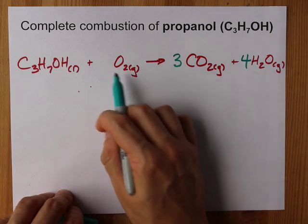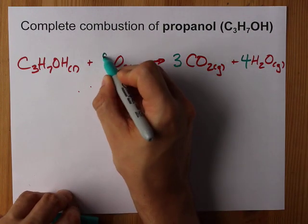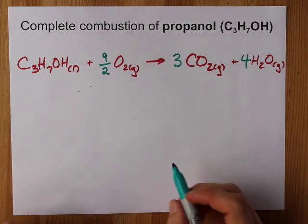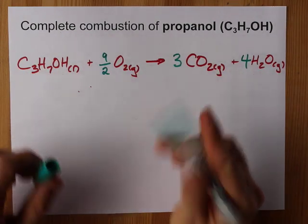Now nine isn't divisible by two, but I can take a little shortcut and say nine divided into pairs, which is 4.5 of these pairs. This is technically balanced.